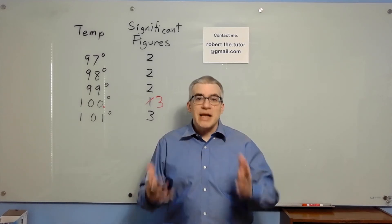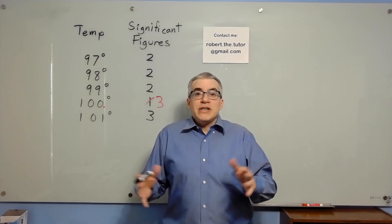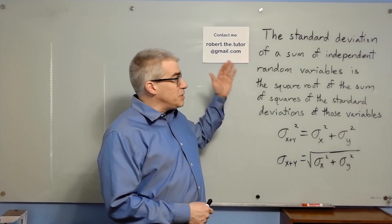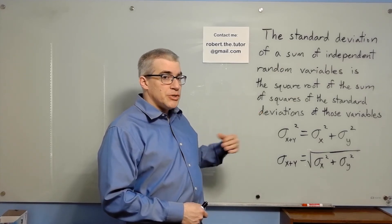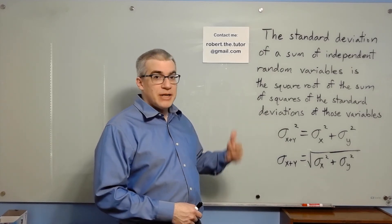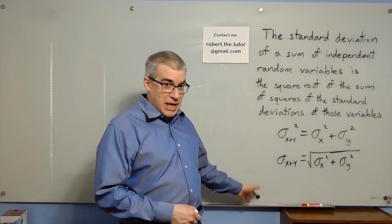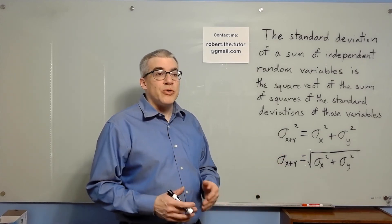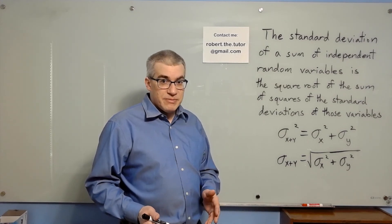And your teacher understands that, right? They're just trying to get you to be able to learn some basic science without having to take multiple courses in statistics. This is how you would begin to describe the errors you get when you add up two numbers with errors — this is just for addition. There's a lot more work to be done for multiplication, division, and so forth. We'd rather not give you all of that mess. We'd prefer that you not have to take multiple statistics courses in order to start learning basic science. So that's why we have significant figures.